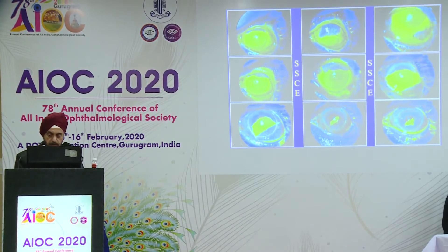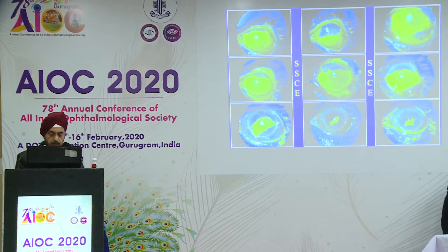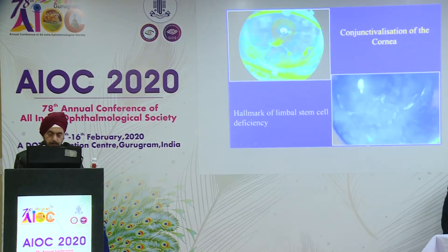The conjunctiva actually grows on top. At this stage one can brush it away, but if you let it grow on top, then you get conjunctivalization of the cornea and you get a problem.